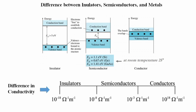Now we will discuss the difference between insulators, semiconductors, and metals. Depending upon the distance between the conduction band and the valence band there are three types of materials. In the insulator, the distance between valence band and conduction band is very high — greater than 5 or 6 eV — so there are no free electrons to conduct electricity. In semiconductor materials, the band gap is around 1.1 eV for silicon, 0.67 eV for germanium, and 1.41 eV for gallium arsenide at room temperature. For metals, there is an overlapping of conduction band and valence band with no band gap, which is why metals are good electrical and thermal conductors.